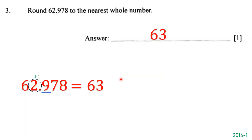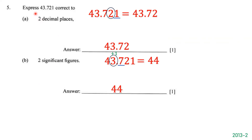The next question says: round 62.978 to the nearest whole number. We circle 2 in the ones place and underline 9 to its right. Since 9 is greater than 5, we round up: 2 plus 1 is 3. We drop the decimal parts. The answer is 63.